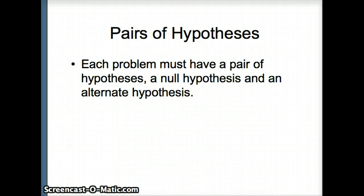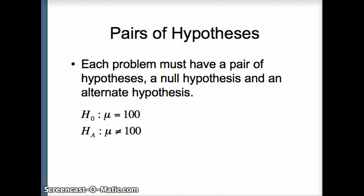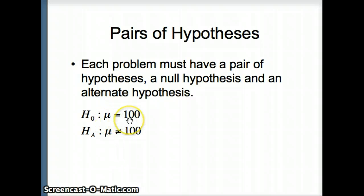Each problem must have a pair of hypotheses — a null hypothesis together with an alternate hypothesis. The null hypothesis always has to have an equal sign, and notice these hypotheses always include parameters. So for example: the null hypothesis mu equals 100 versus the alternate hypothesis mu does not equal 100 — a two-tailed test.